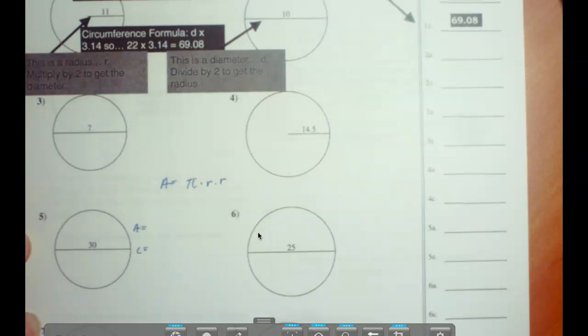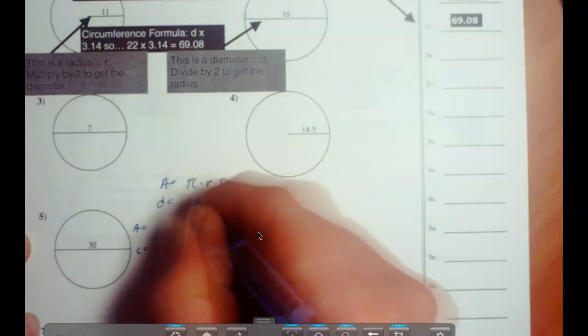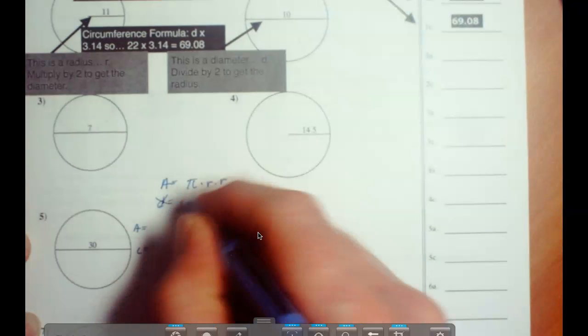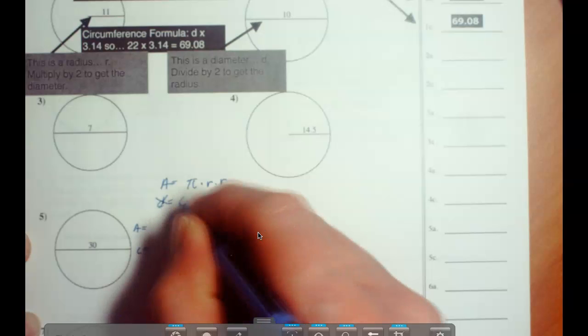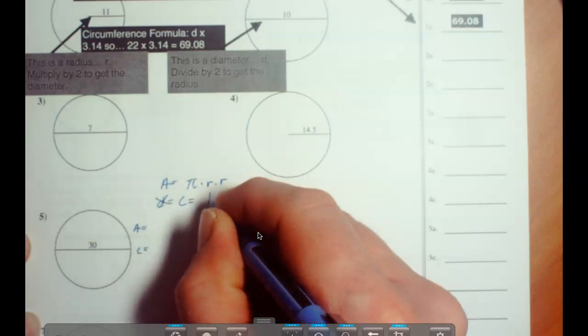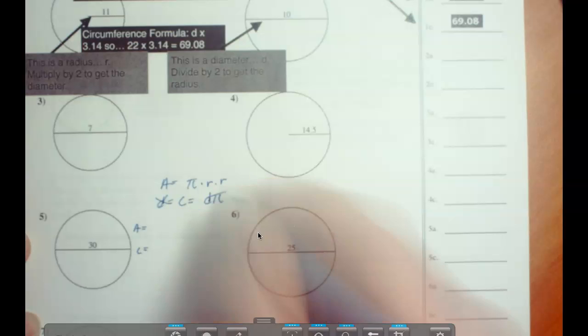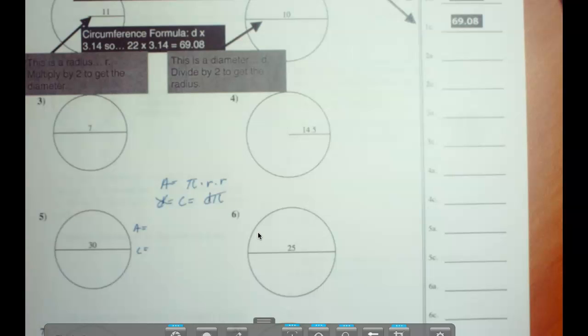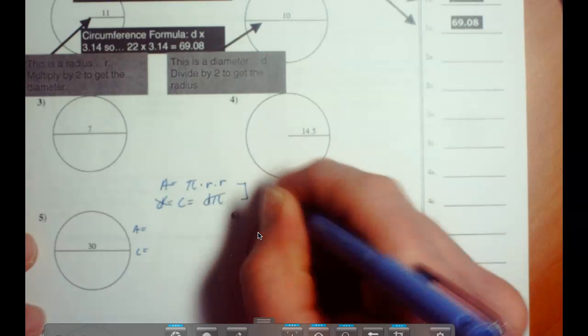And the circumference is equal to d pi, the diameter times pi. And for both of these we will be using 3.14.